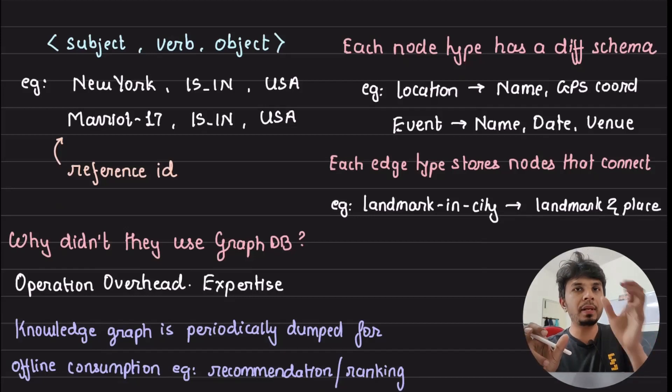And each edge type would have what kind of nodes can it connect to. For example, landmark-in-city can connect a landmark node to a city node because you just can't do random connections. You need to have strict constraints that landmark-in-city can connect only a landmark to a city, right?